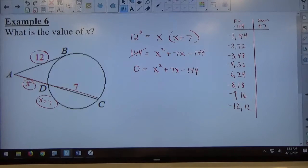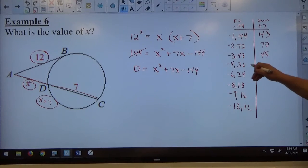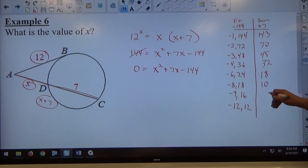If I add them up and I'm adding algebraically, so different signs subtract, bigger number positive. So this would be positive 143, this is positive 70, this is positive 45, this is positive 32, this is positive 18, positive 10, positive 7, positive 0 or negative 0 take your pick. We want positive 7, we got positive 7 here. That's the right pair of factors.